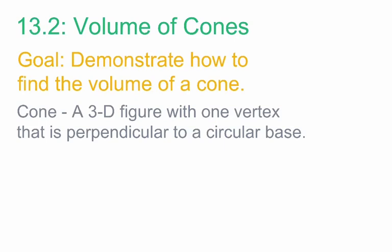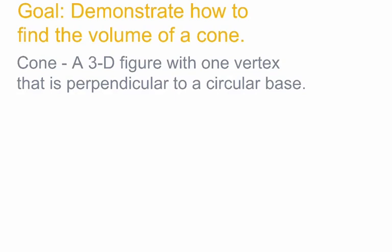In order to draw a cone, we'll start off with an oval, kind of like with a cylinder, with a center of that oval. Then we'll put a single dot directly above the dot that we made in the base. Then we're going to add a line from the vertex to the base on each side, and that is how we get our cone.